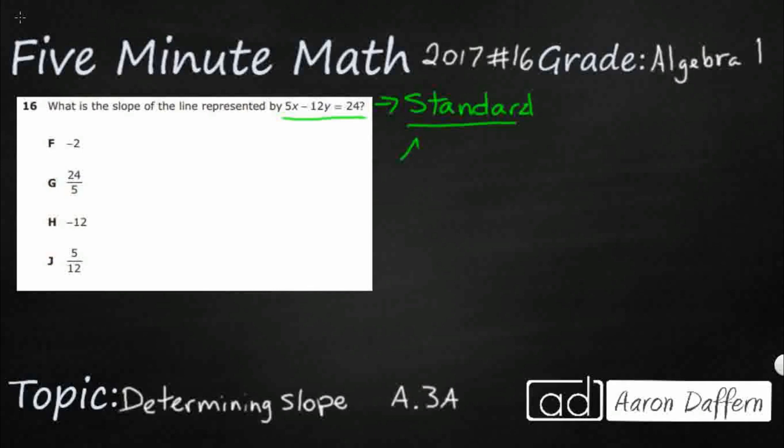So our standard form looks like this: AX plus BY equals C. And so you notice A and B are coefficients, C is a constant, there's no slope identified in any of these letters. So just getting this particular form is not going to be that helpful.